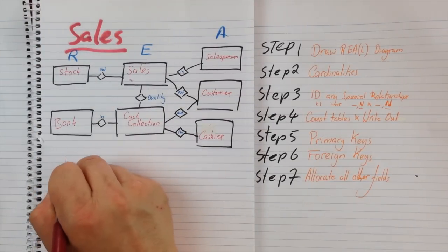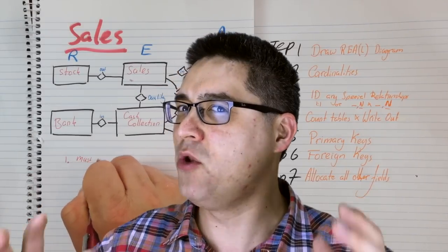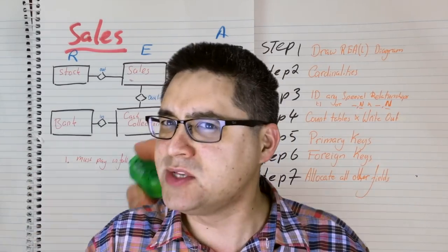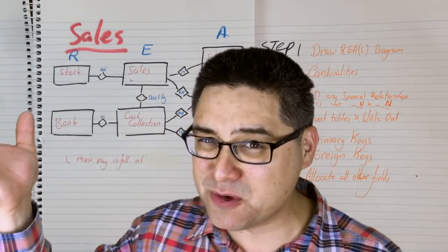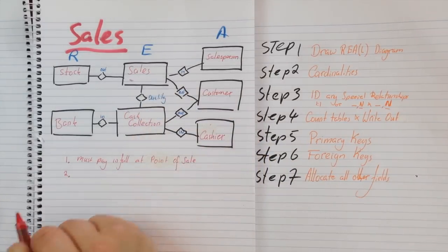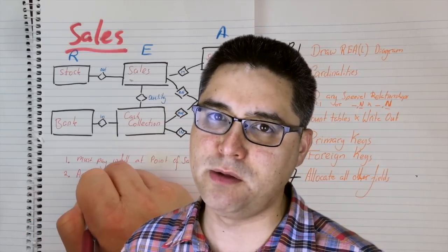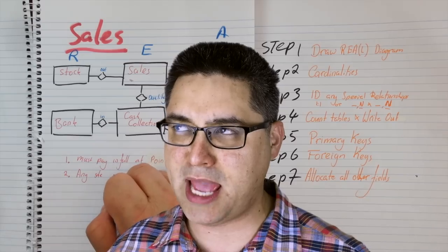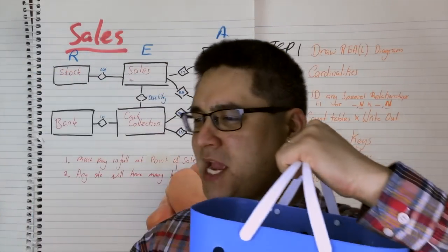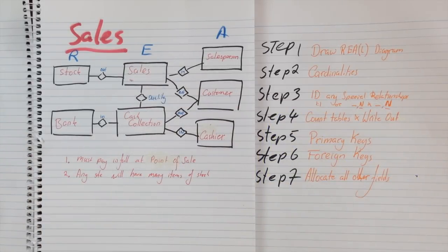Let's suppose two things about this business. Number one, that you must actually pay in full upon the sale — think about a normal business where consumers actually have to pay for everything when they want to buy it. Every time we pay for something we are going to have a sale, and every time we sell something we're going to get cash, otherwise there's going to be no sale. And number two, any sale can involve many items of stock. Customers can buy more than one thing per sale — think of a shopping cart where they keep buying stuff and at the end they go to the checkout and pay for it all.